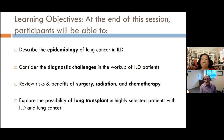Then we'll talk about the risks and benefits of the various treatments that exist for lung cancer — surgery, radiation, and chemotherapy — each of which has a unique set of risks in the ILD patient. And finally, I often get asked about lung transplant. If patients have cancer, they ask if they can get a lung transplant. We'll talk about the possibility of lung transplant in highly selected patients with ILD and lung cancer, and why that's not usually the path taken.